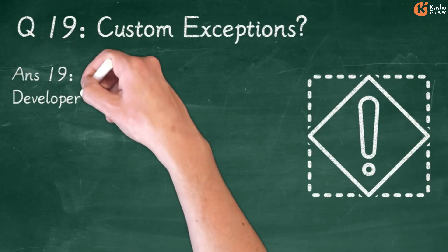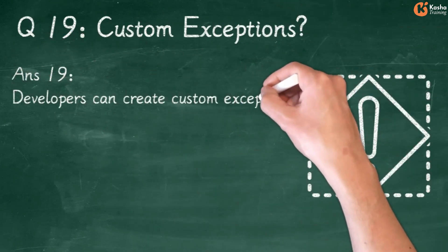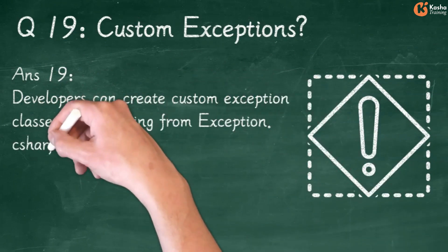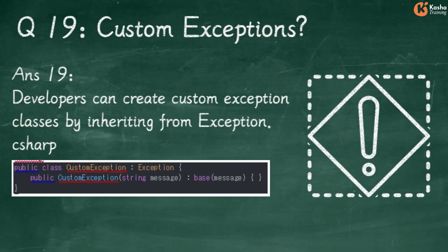Answer 19: Developers can create custom exception classes by inheriting from Exception. In C#: Public Class CustomException inherits from Exception. Public CustomException with String Message calls Base(Message).